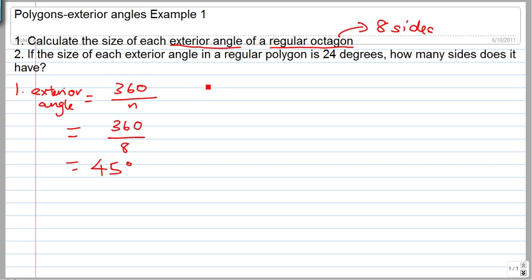Each exterior angle in a regular octagon is 45 degrees. Question two: if the size of each exterior angle in a regular polygon is 24 degrees, how many sides does it have? The exterior angle equals 360 divided by n.